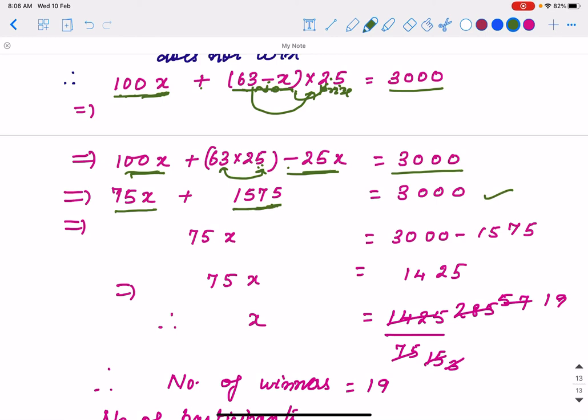Now, this number we are taking to RHS. Then it will become negative. So 75X will be 3000 minus 1575. So 75X, if you subtract, we are getting 1425. X will be, as here it is multiplication sign. If we are taking this side, it will be division sign. So it is 1425 divided by 75. Now we cancel. 5, 15, here 5, 2, 10, 4, 2, 5, 8, and 5, 5. Again with 5, we can cancel. 5, 3, it is 5, 5, so 25, 3, 5, 5, 7, 3, 19.